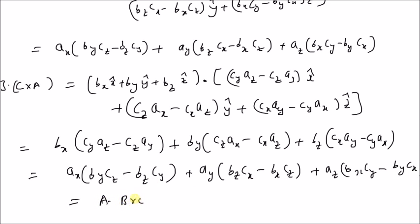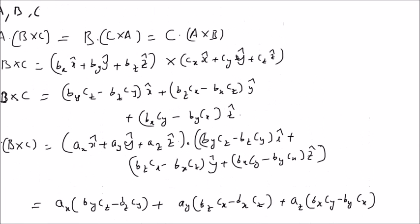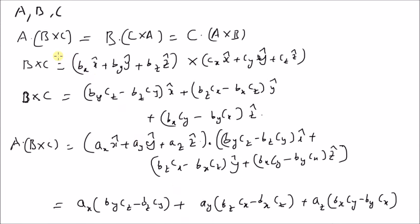By following a similar logic we can also prove that this is equal to C dot A cross B. Therefore the scalar triple product is basically the same irrespective of the position of the vectors A, B, C — the cyclic order ABC is still maintained. Thanks for watching.